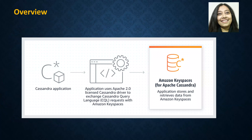This is a simple diagram that explains how Keyspaces works. If you have a Cassandra application that uses CQL to get data, you can still continue to use CQL and have it connect to Amazon Keyspaces to retrieve its data.